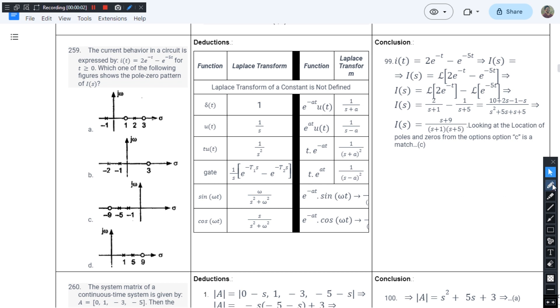This is question number 259 from chapter 1 of J.B. Gupta's book. The current behavior in a circuit is expressed by I(t) equals 2e^(-t) minus e^(-5t) for t greater than or equal to 0. Which one of the following viewers shows the post-zero pattern of that?